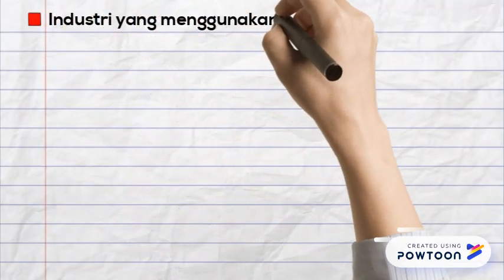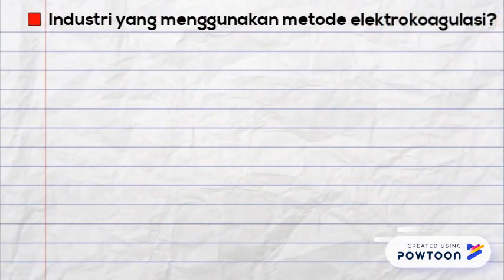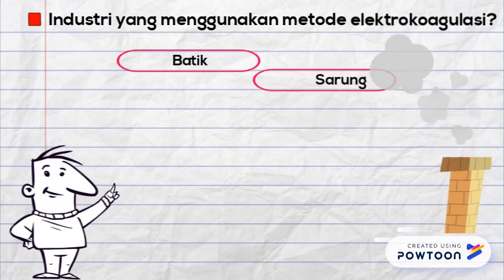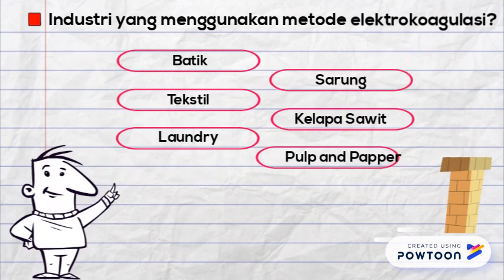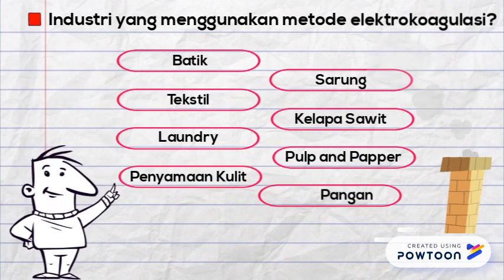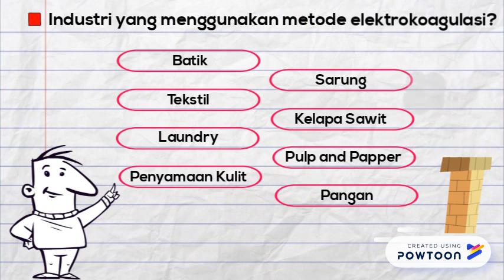Industri yang menggunakan metode elektrokoagulasi ada banyak. Di antaranya ada batik, sarung, tekstil, kelapa sawit, laundry, alpine paper, penyamakan kulit, pangan, dan juga industri lainnya.